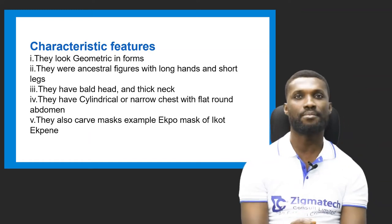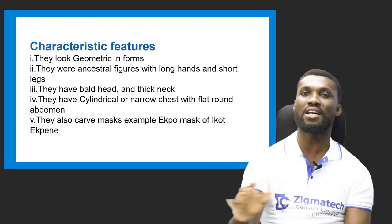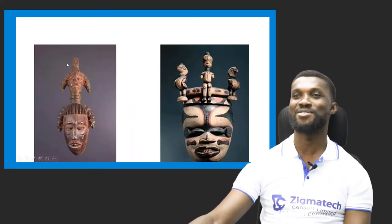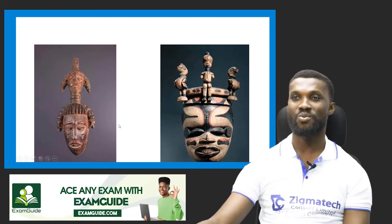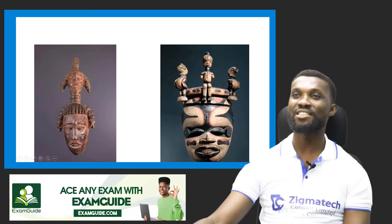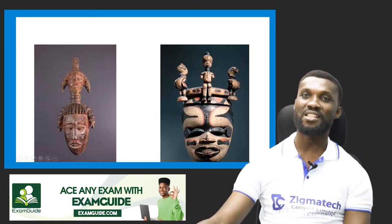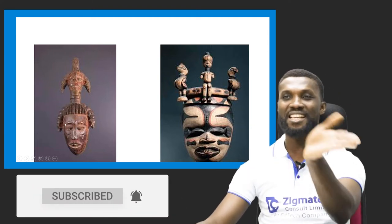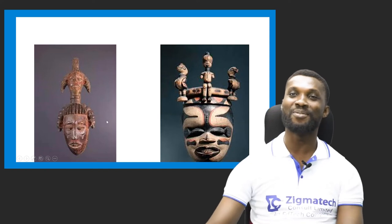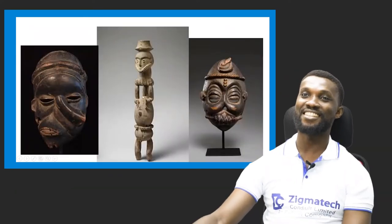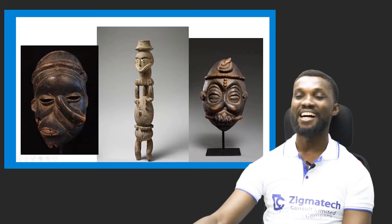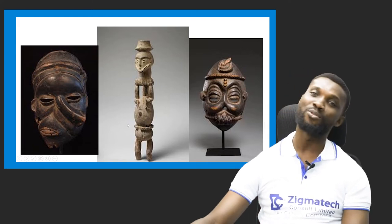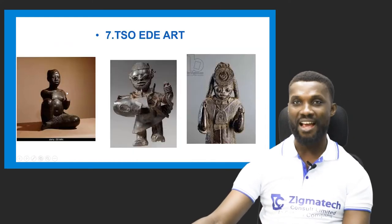Interesting artwork done by the Ibibio artists. Now let's see some of the Ibibio artwork. Imagine this Ekpo mask — this is the Ekpo mask on screen. Beautiful artworks. They started practicing symmetric balance — if you divide this piece into two, both sides mirror each other. You see the long head, the fat neck, and the round abdomen — this is the perfect example of Ibibio art.